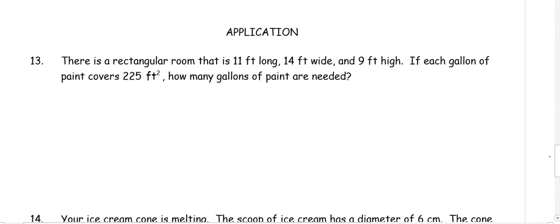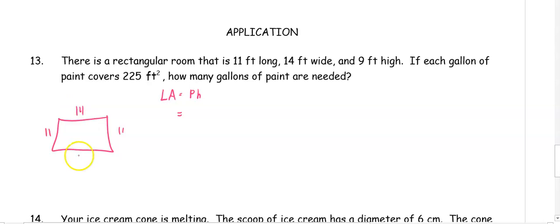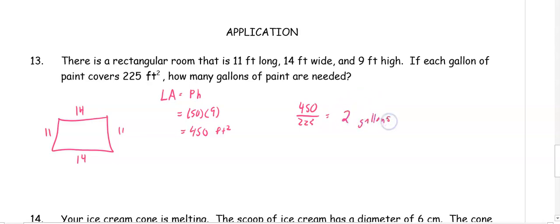In number thirteen, there's a rectangular room that is 11 by 14 and is 9 feet high. If each gallon covers 225 square feet of paint, how many gallons of paint are needed? We add the dimensions together: 11 plus 14 plus 11 plus 14 gives us a perimeter of 50, and 50 times the height of 9 is 450 feet squared. Dividing 450 by 225 gives us exactly 2 gallons of paint.